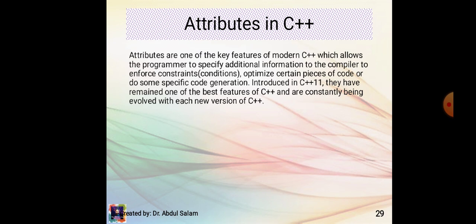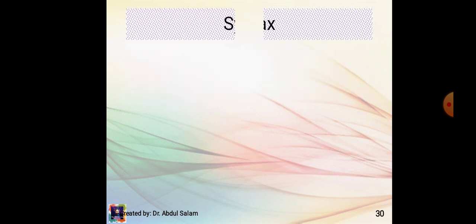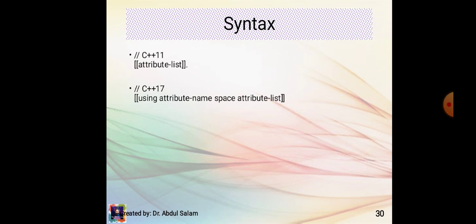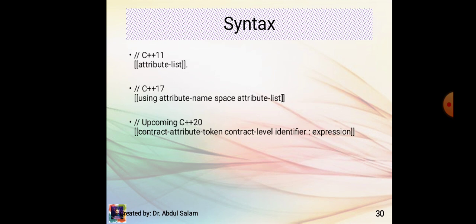Attributes in C++: attributes are one of the key features of modern C++ which allow the programmer to specify additional information to the compiler to enforce constraints, optimize certain pieces of code, or do some specific code generation. Introduced in C++11, they remain one of the best features of C++. Syntax examples: C++11 uses [[attribute-list]]; C++17 adds [[using attribute-namespace: attribute-list]]; and upcoming C++20 uses contract attribute with token, contract level, identifier, and expression.